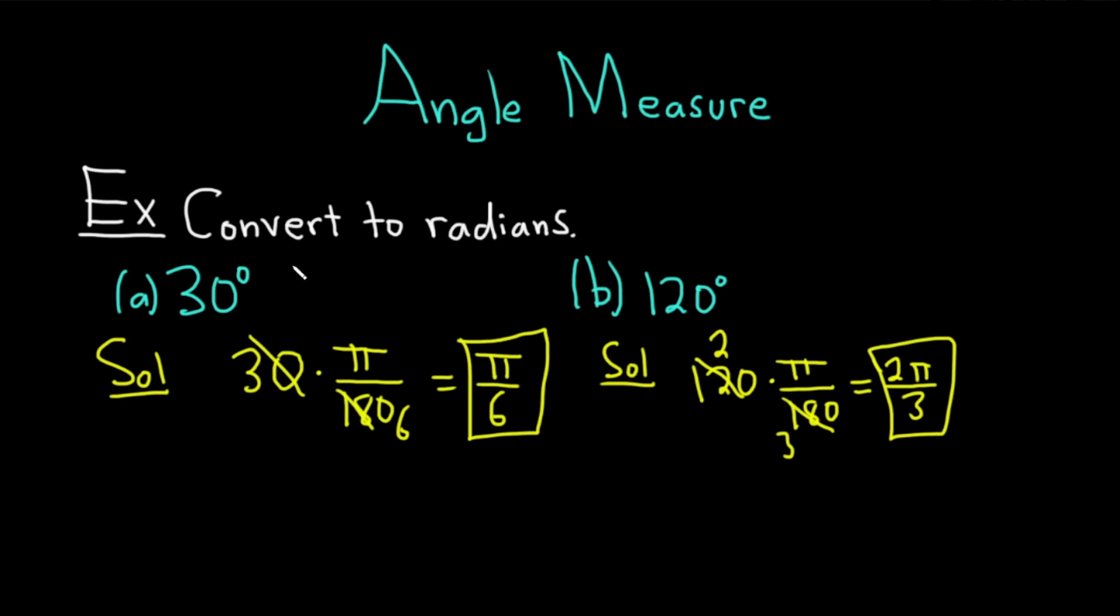So, in order to convert degrees to radians, you always multiply by pi over 180. What if we had to go the other way? What if we were going from radians to degrees? Let's do some examples of that.